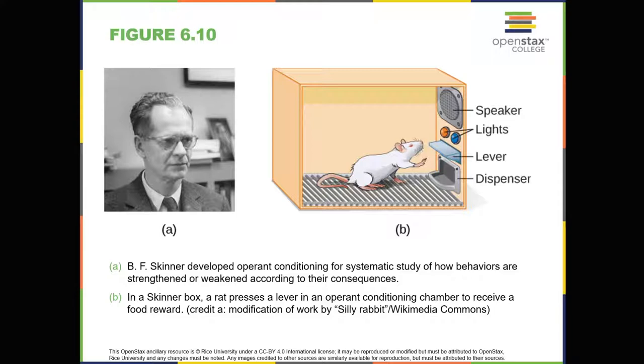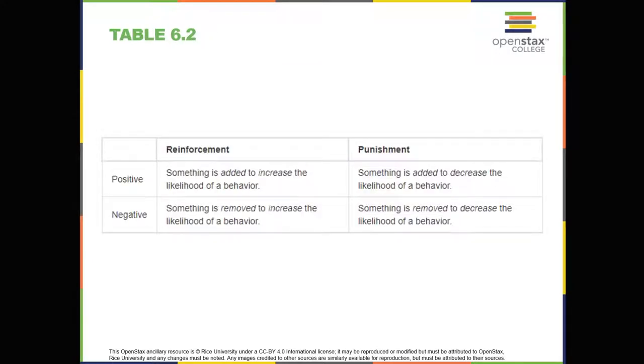Working with Thorndike's law of effect as his foundation, Skinner began conducting scientific experiments on animals – mainly rats and pigeons – to determine how organisms learn through operant conditioning. He placed these animals inside an operant conditioning chamber, which has come to be known as a Skinner box, shown in Figure 6.10. A Skinner box contains a lever for rats, or a disc for pigeons, that the animal can press or peck for a food reward via the dispenser. Speakers and lights can be associated with certain behaviors.